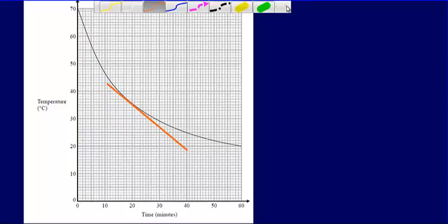So to work that out, I need to look at what is happening to y as x is increasing by 1. When I mean y, I'm talking about the y-axis—so temperature—and when I'm talking about x, I'm talking about time in minutes.